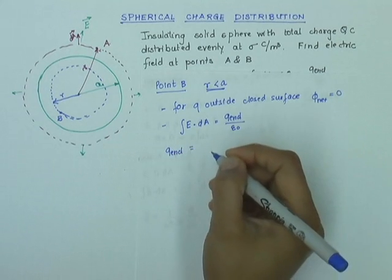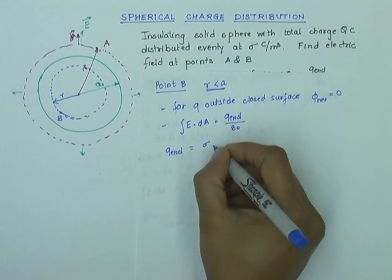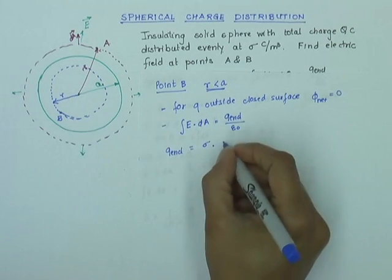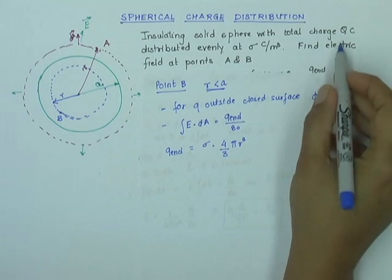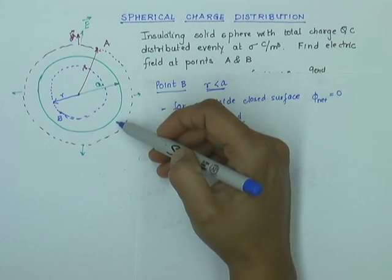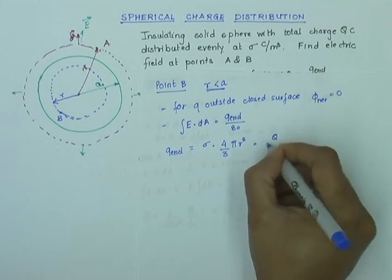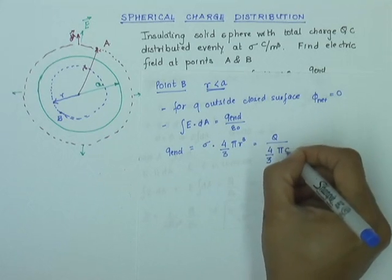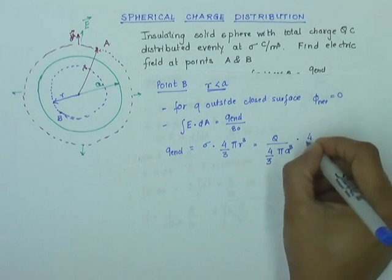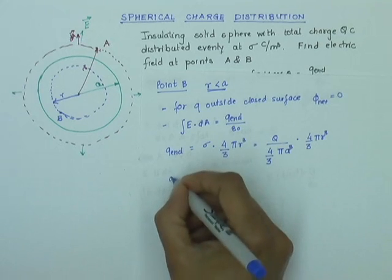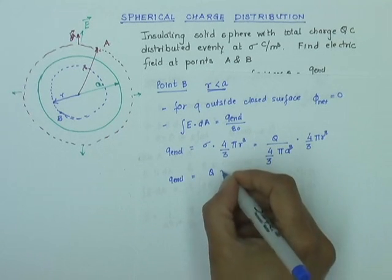To find Q enclosed, the charge density is rho coulombs per meter cubed, so Q enclosed equals rho times the volume of the inner Gaussian sphere, which is (4/3)πr³. The density rho equals the total charge Q divided by the volume of the original sphere, which is Q over (4/3)πa³. Substituting, Q enclosed equals Q times r³ over a³.